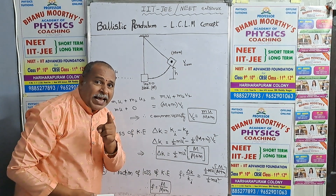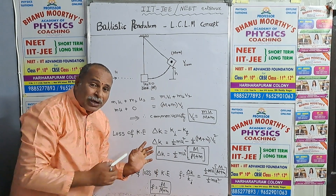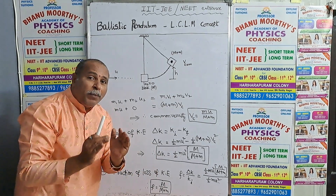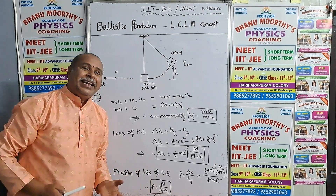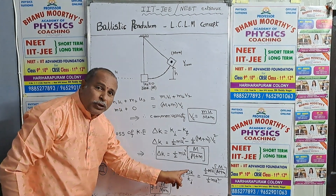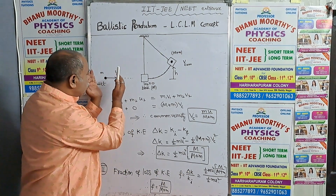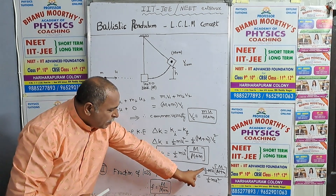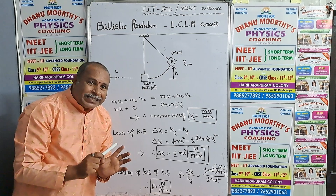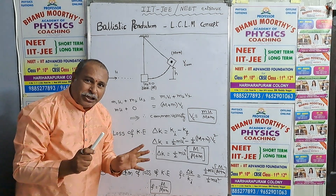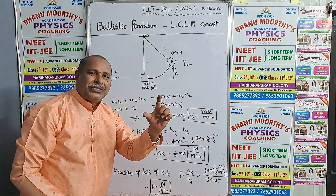My students and IET aspirants, listen carefully to this concept. The third possibility of asking the question in the entrance examination is the fraction of loss of kinetic energy — that is, the total loss of kinetic energy divided by the initial kinetic energy. The U² terms get cancelled, and finally you get capital M divided by (m + capital M). This is the fraction. If multiplied by 100, you get the percentage loss of kinetic energy.